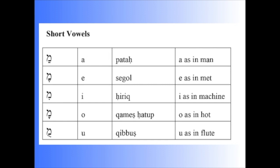It is written as a small T shape. The Qibutz is a U vowel, the U as in 'flute,' written as three dots on a diagonal.